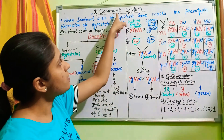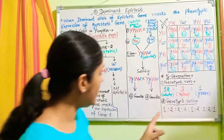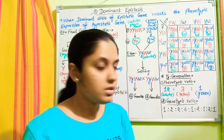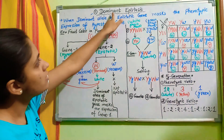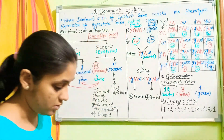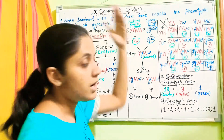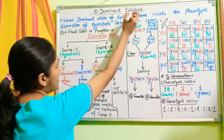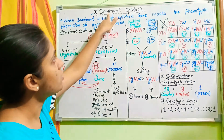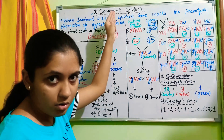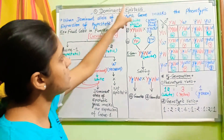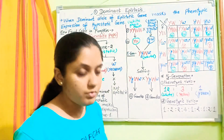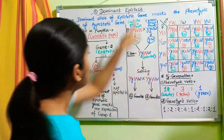In this video we will discuss dominant epistasis particularly, and the cross which is based upon dominant epistasis. We can understand the definition of dominant epistasis easily by its name. The word 'dominant' refers to the dominant allele of the epistatic gene, which is doing the work of epistasis — the suppression work.